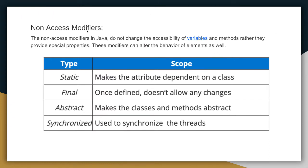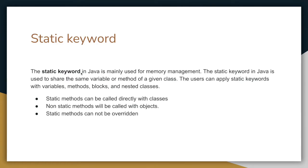Non-access modifiers do not change the accessibility of variables but provide specific properties to elements. For example: static makes an attribute dependent on the class rather than an instance. Final, when applied to a variable or class, does not allow any changes. Abstract makes classes and methods abstract. Synchronized is used to synchronize threads. For static — if we have a student class for a school, no matter how many student objects there are, the school name is the same.